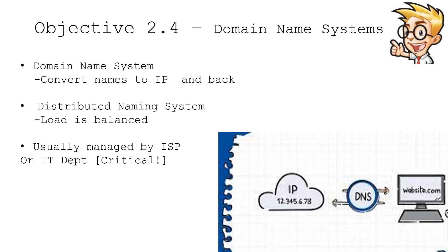Almost every organization and every data center has inside of it a DNS server. DNS stands for Domain Name System and it's a service that's primarily responsible for converting between fully qualified domain names and IP addresses. So if you go into a browser and type www.google.com, that browser will ask the DNS server what's the IP address and it will report back. From that point forward the web browser uses the IP address of the web server to communicate back and forth to your web browser.